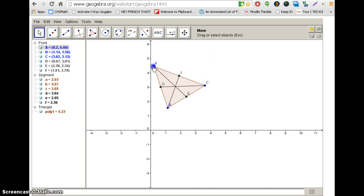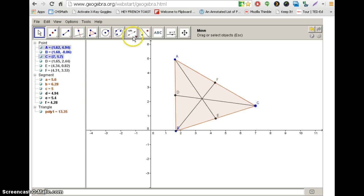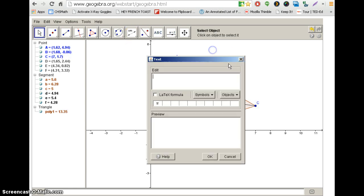What happens if I change my triangle? Well, I can change my triangle. It doesn't really matter. Those medians all meet at the same point. This is called a point of concurrency.